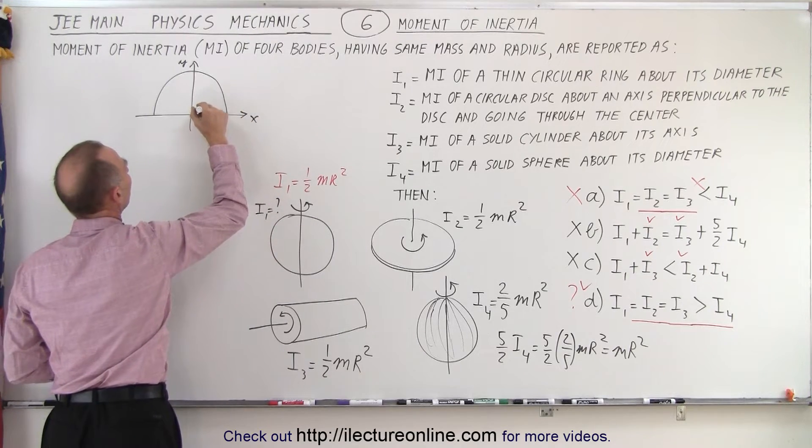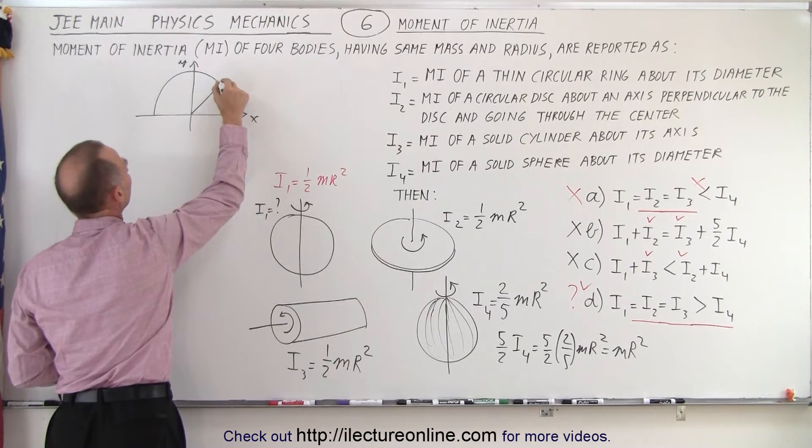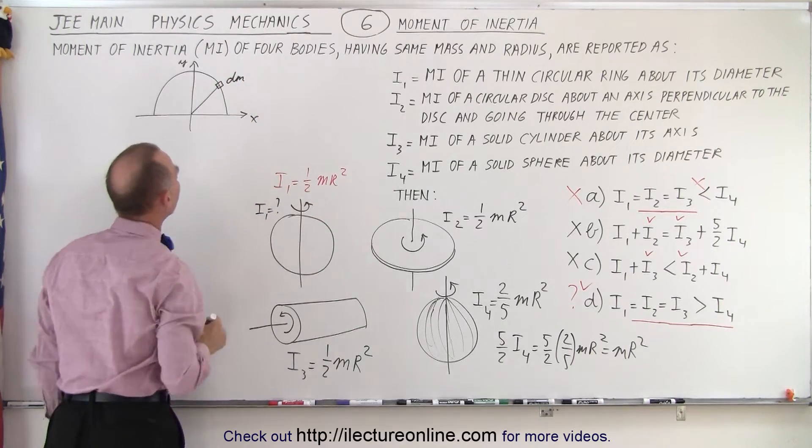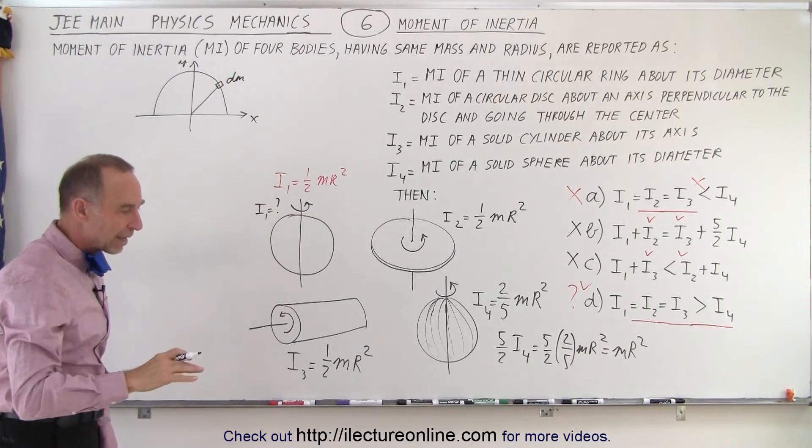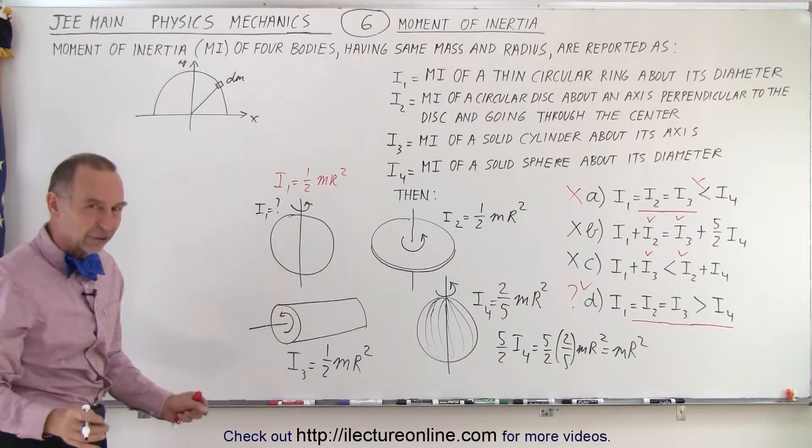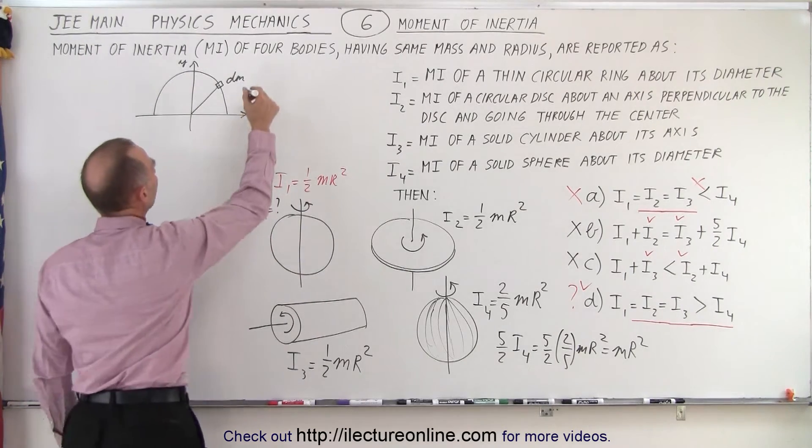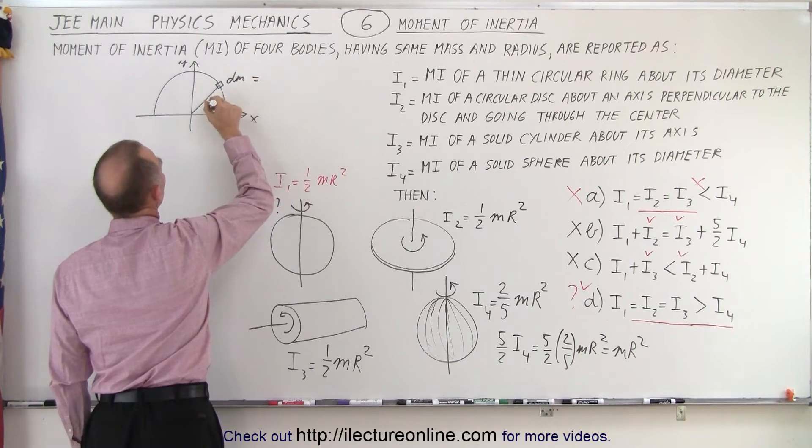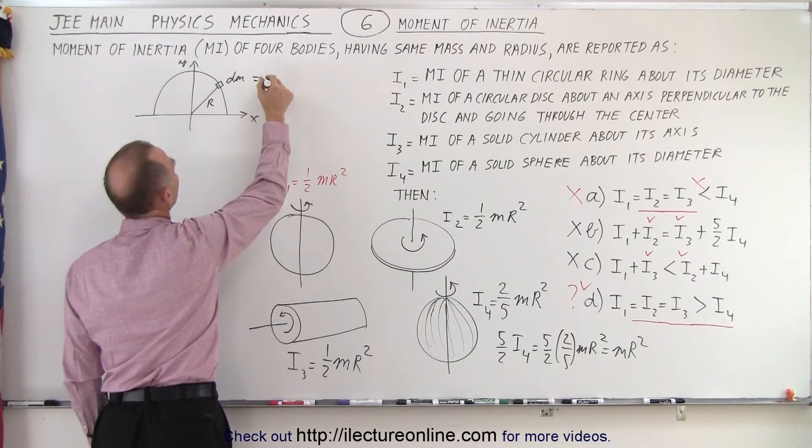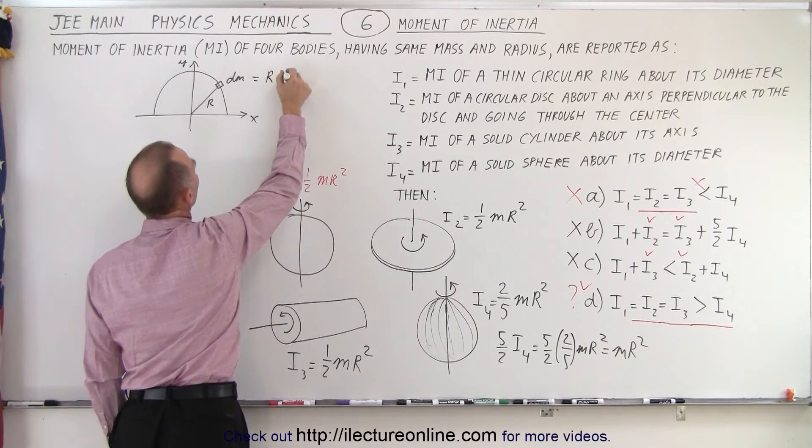And of course, the mass would be proportional to the length. So we could use the length instead of mass. And so we can therefore call dm as equal to the radius times the angle d theta. So we could call this r times d theta.